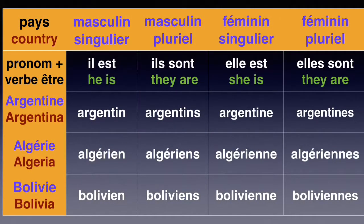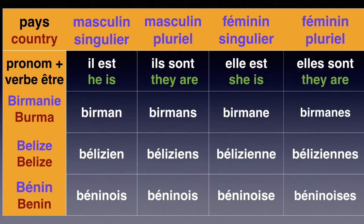Il est argentin, he's Argentinian. Elle est argentine, we add an E to show it's feminine. Il est algérien, he's Algerian. Elle est algérienne, double N, E. Il est bolivien, he's Bolivian. Elle est bolivienne, again double N, E to show it is feminine. And please don't forget when it's plural you add an S. Il est birman, he is Burmese. Elle est birmane, we add an E at the end to show it's feminine.